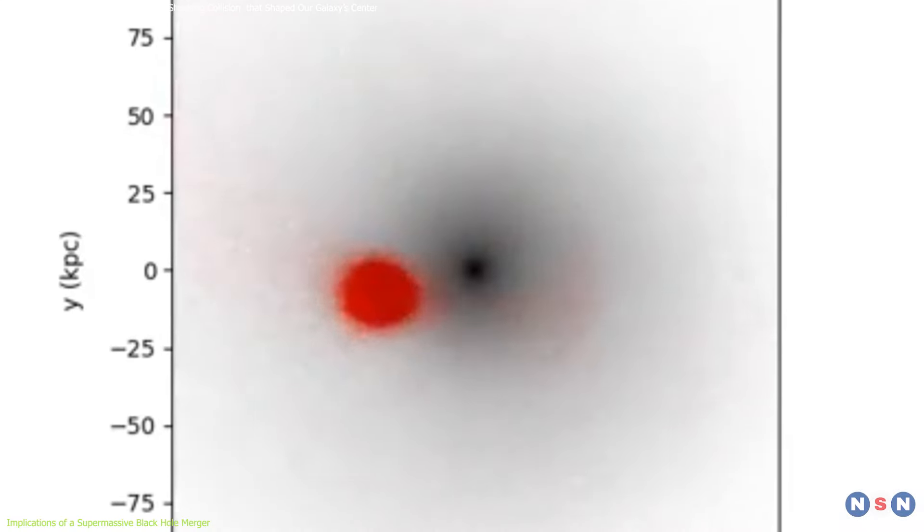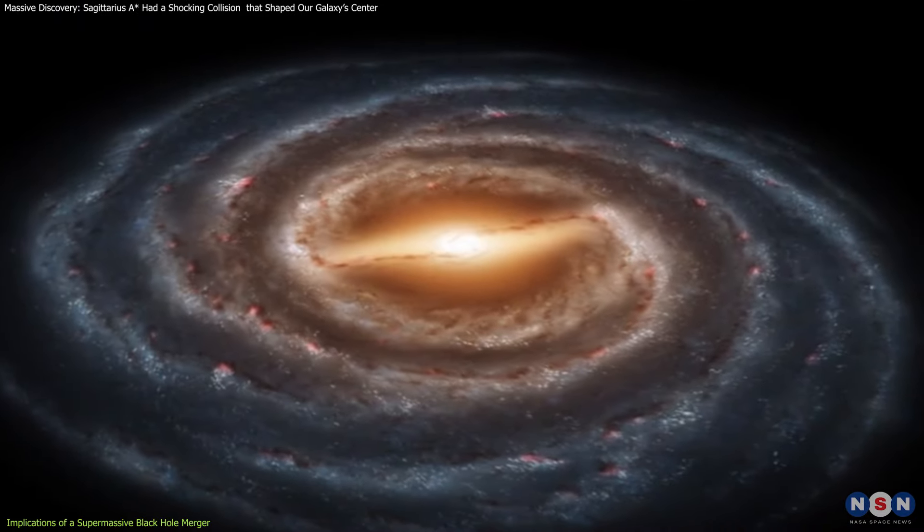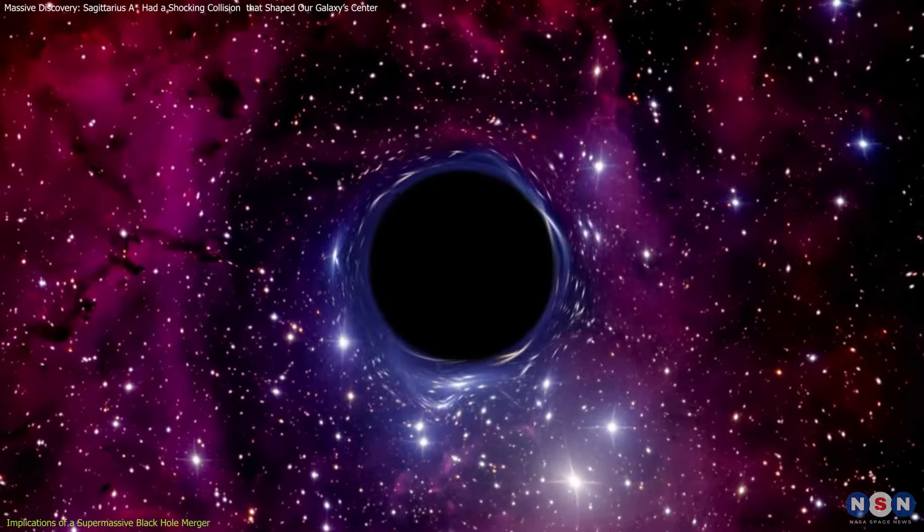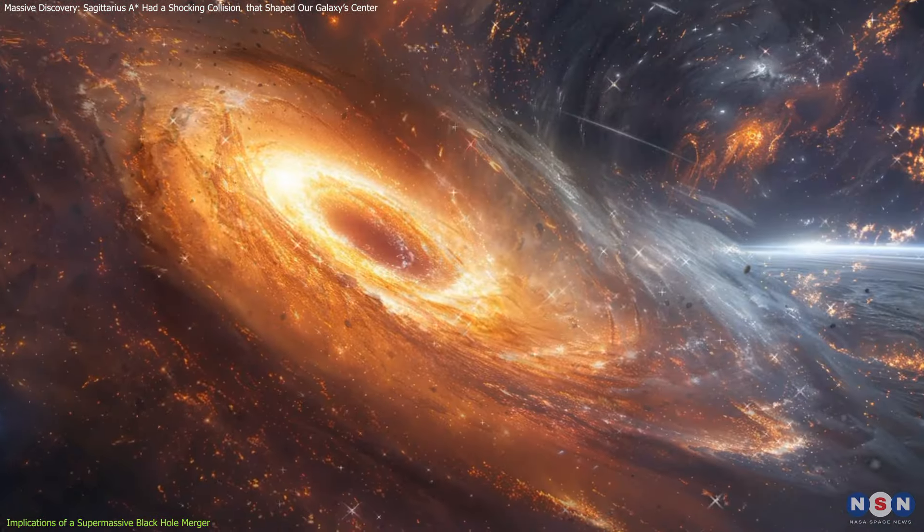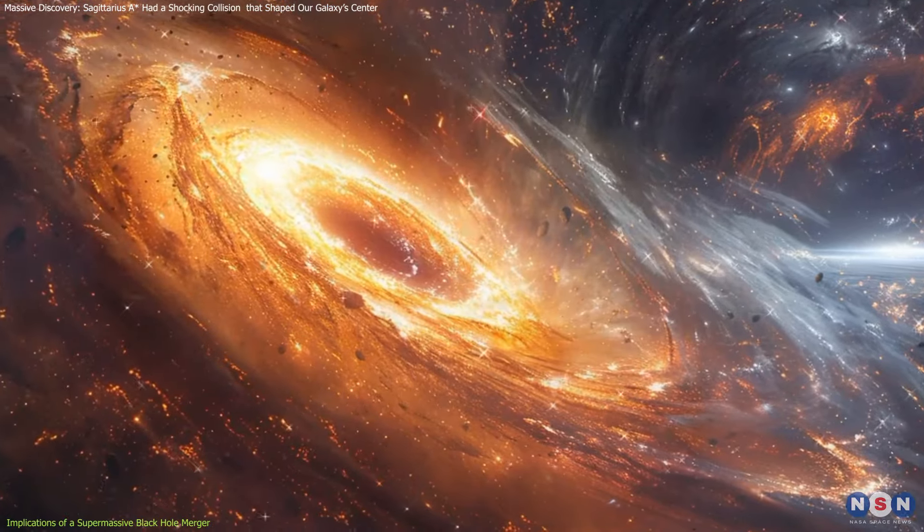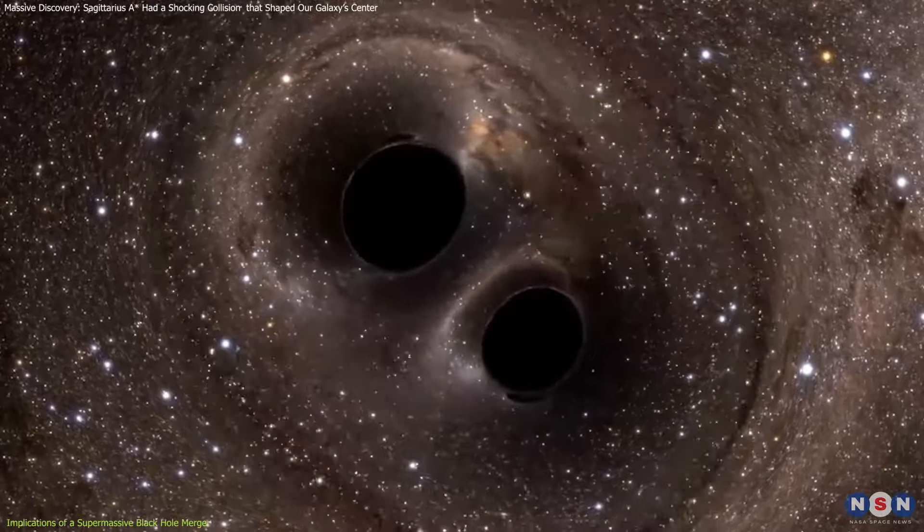This points to a period of significant gravitational interactions, which would have reshaped the orbits of stars, gas, and other materials in the galaxy. This concept reinforces the hierarchical merger theory of supermassive black hole growth, indicating that galaxies and their central black holes evolved together over billions of years through chaotic and sometimes violent processes.